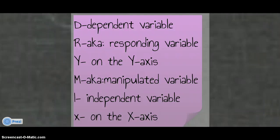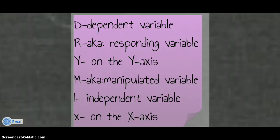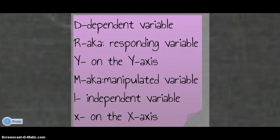Each letter in DRY MIX tells us where variables belong on a graph. The D stands for dependent variable — the variable we're measuring. An older term for dependent variable is responding variable, so the R stands for that. The dependent variable goes on the y-axis, the line that goes straight up and down. For MIX: M stands for manipulated variable, an older term meaning the same as the I, which is independent variable — the thing I choose to change. The independent variable goes on the x-axis.